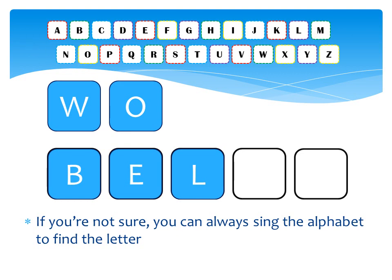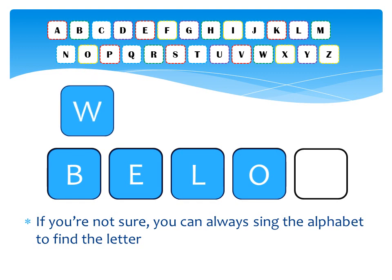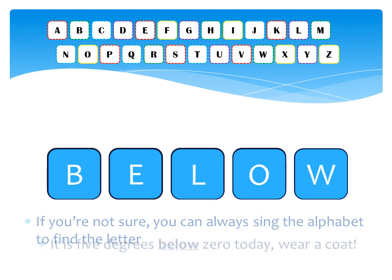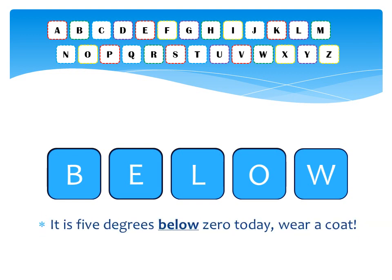M-N-O, and all the way to letter W. The word is below. What does below mean? You can look in the dictionary. You can even get a sample sentence from the dictionary. I've made one myself. It is five degrees below zero today. Wear a coat.